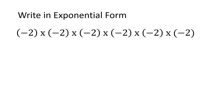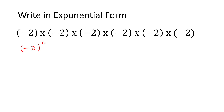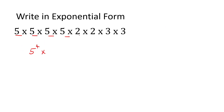Pretty easy. Here we have the number minus 2 in a bracket, 6 times, and there is a multiply between all of them, so we write it as that. Here we have the number 5, 4 times, so we say 5 to the 4. Multiply. And then we have the number 2, 2 times, and the number 3, 2 times.